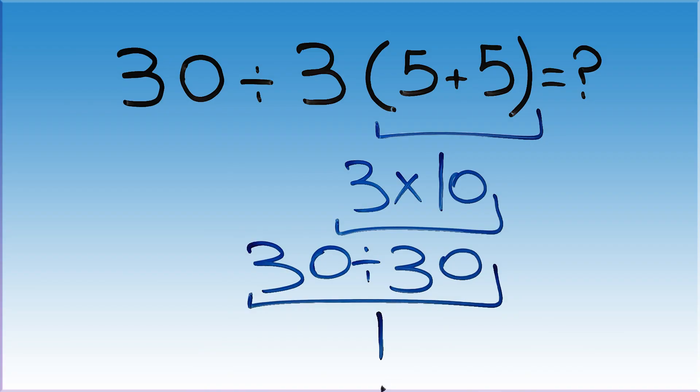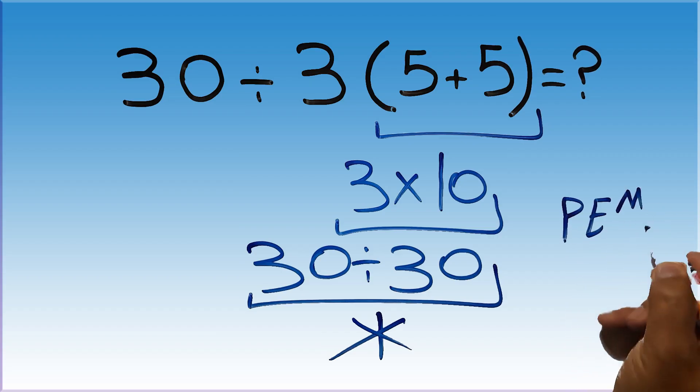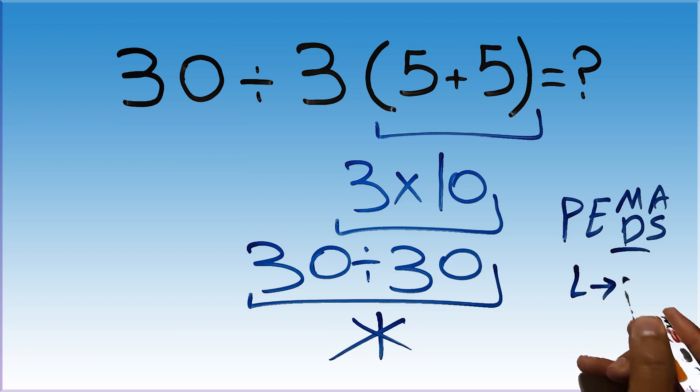But this answer is not correct, because according to the order of operations, first we have to do parentheses, then exponents, then multiplication or division, and finally addition or subtraction. Remember that multiplication and division have equal priority, and we have to work from left to right. And the same applies to addition and subtraction.